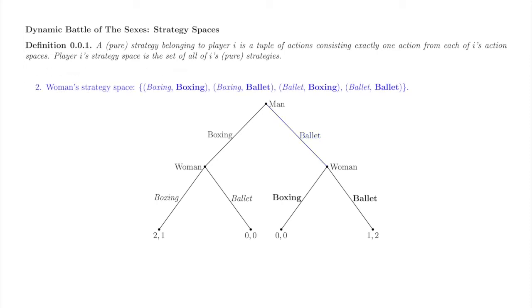Now, here is the woman's strategy space. She has two moves, so each of her strategies is a pair of actions — one action to be taken if the man goes boxing, and the other to be taken if he goes to the ballet. It is of no game-theoretic consequence that she takes only one of the actions during the play of the game. To specify a strategy, she must have a complete plan. Here is her strategy italic boxing, bold boxing. We might informally refer to this strategy as 'boxing no matter what.'